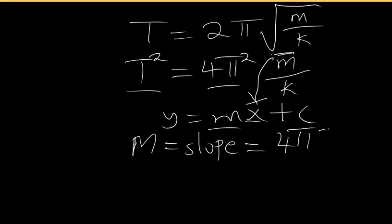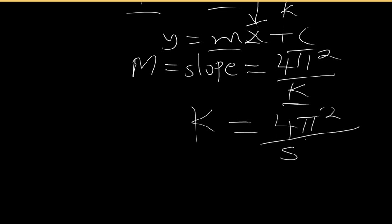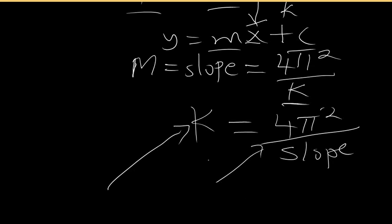With this formula and the graph, you will be asked to find the spring constant to verify your experiment was correct. The spring constant equals 4π² divided by the slope of your graph. Choose a particular spring constant, create the table, draw the graph, evaluate your slope, then calculate the spring constant. If what you get is approximately equal to the spring constant you used to populate the table, your graph is correct. See you in the next video, thank you very much.